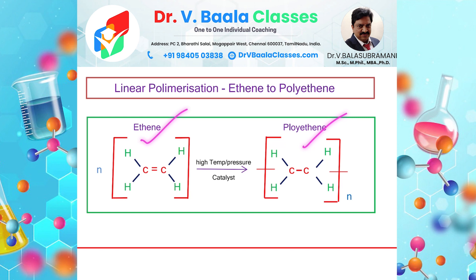Ethene is called the monomer; polyethene is called the polymer. Ethene is a highly reactive simple molecule. The molecules combine through covalent bonds to form polyethene. This process is called polymerization.